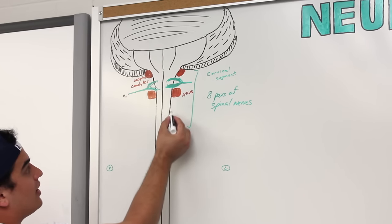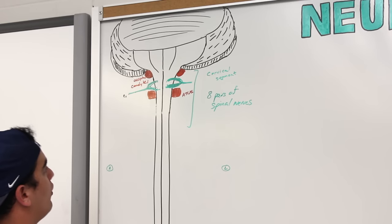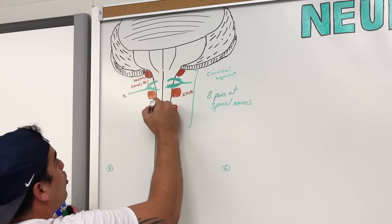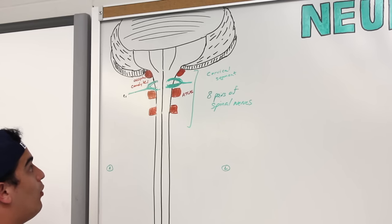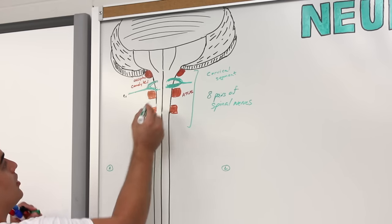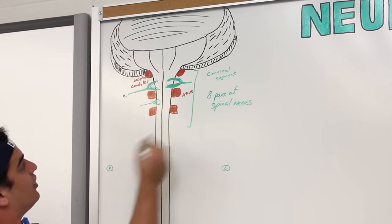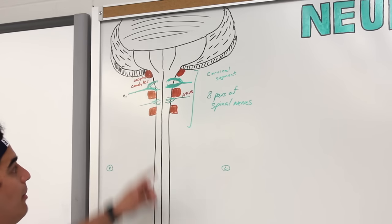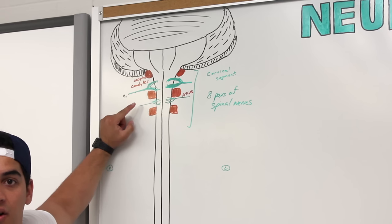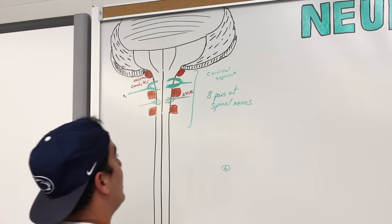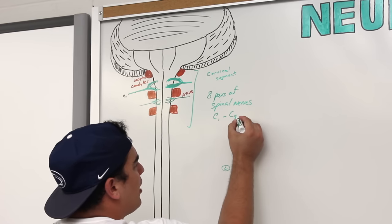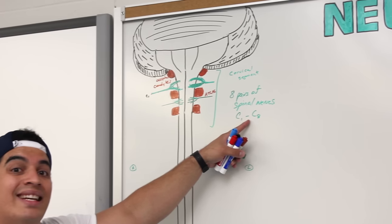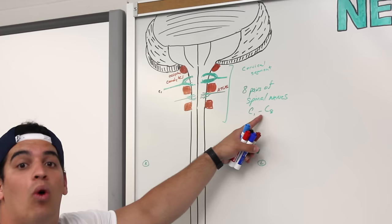It continues: between atlas and axis — C2 — comes the C2 nerve. And if we keep going, there are eight pairs total, C1 all the way to C8. Some people get thrown off by C8; it's just the cervical spinal nerve going in between the seventh cervical vertebrae and T1.